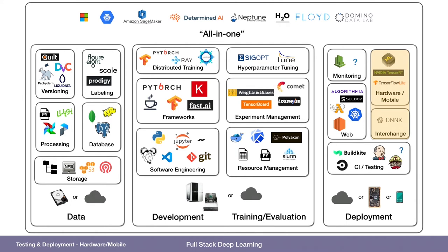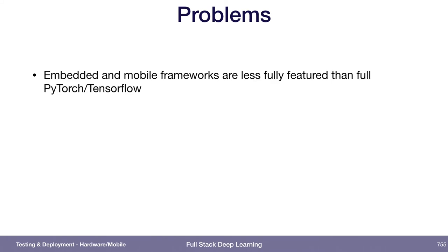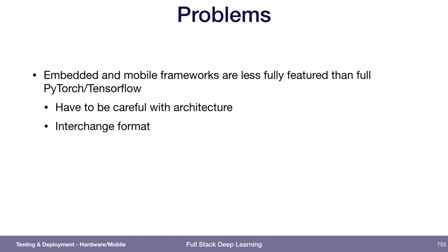Continuing to the end: deploying on hardware mobile, which also includes interchange formats. The unique problems on deploying on embedded or mobile systems is that the frameworks available are usually less fully featured than full PyTorch or TensorFlow. You might not even have a framework, or just a limited one. Because of that, we have to be more careful with the architecture choices we make, and we may give thought to an interchange format.